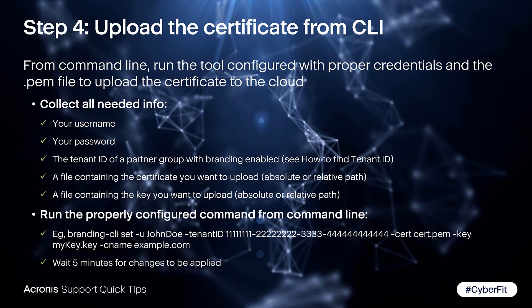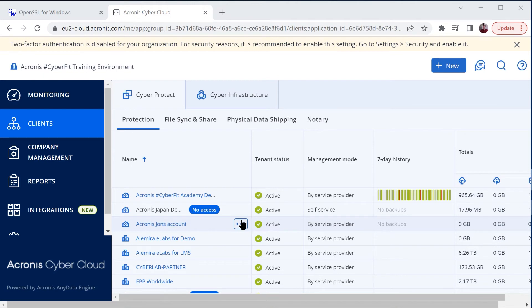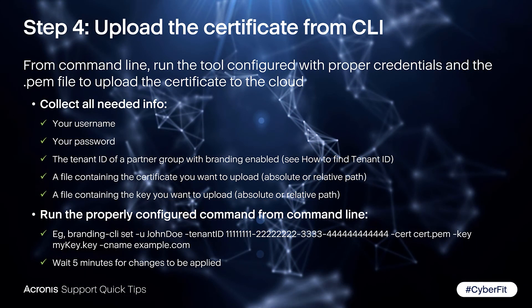Finally, go to the command line in the appropriate directory and run the tool configured with your proper credentials. You'll need your username and password, and very importantly, the tenant ID. To get your tenant ID, log in to your system, go to the client's tab, find the appropriate tenant, click the triple ellipsis, and select Show ID. You'll also need the relative or absolute path to the downloaded tool file and the .pem file you want to upload. An example of the exact command is shown on screen.